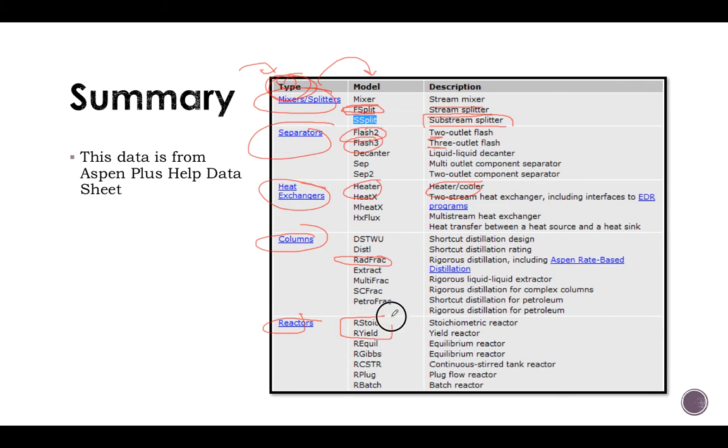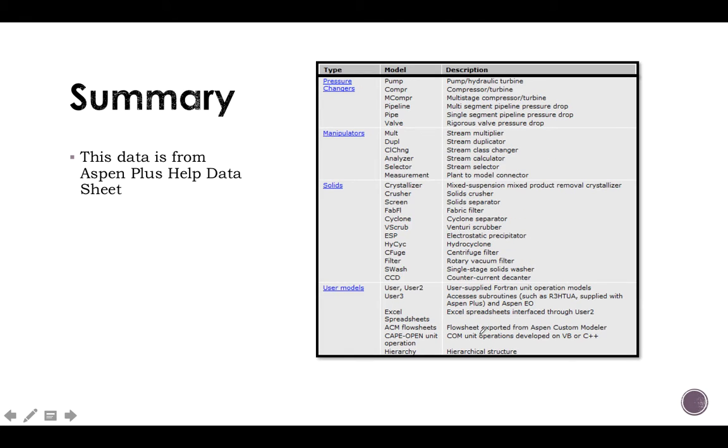Reactors, which we are going to see stoichiometry and geo reactors. And finally, in this course included is pressure changers, which are compressors, pumps, multi-stage compressing, pipeline, pipes, valves. All these, well, you don't need to see them. We are not going to analyze them in this course.